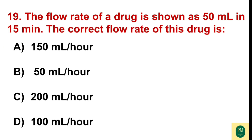The flow rate of a drug is shown as 50 ml in 15 minutes. The correct flow rate of the drug is: Option A: 150 ml per hour. Option B: 50 ml per hour. Option C: 200 ml per hour. Option D: 100 ml per hour. The correct option is Option C — 200 ml per hour.